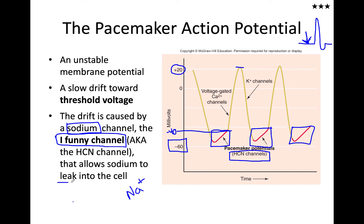iFunny channels are technically classified as leak channels, meaning they drift open and closed somewhat randomly. Some of that randomness can be controlled by the sympathetic and parasympathetic nervous systems. The sympathetic nervous system can cause these channels to become more leaky, whereas the parasympathetic can cause them to be less leaky.